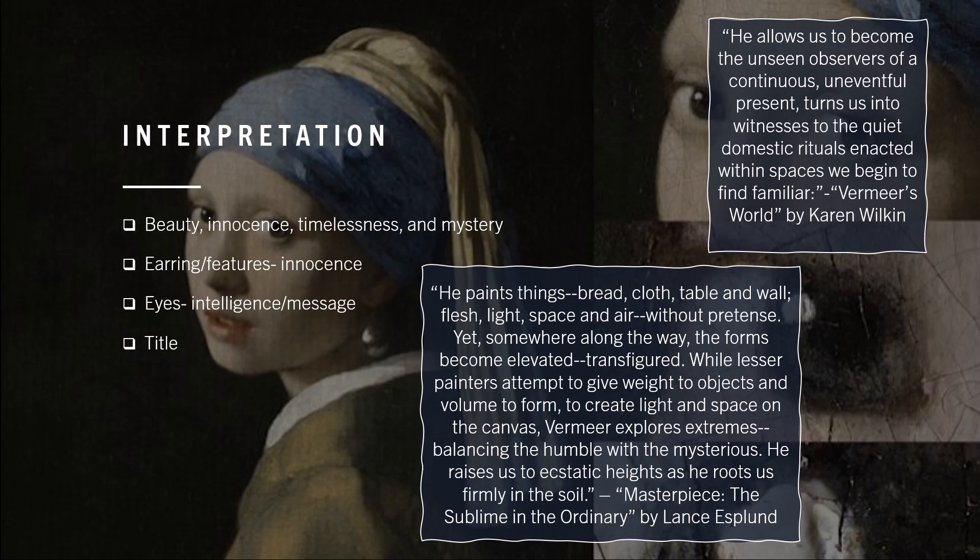In Vermeer's World, Karen Wilkin perfectly expresses this message seen in Vermeer's paintings when she states: "He allows us to become the unseen observers of a continuous, uneventful present, turns us into witnesses to the quiet domestic rituals enacted within spaces we begin to find familiar." The title of this piece has been changed over time. While the piece used to be called The Girl with the Turban, it is now known as Girl with the Pearl Earring. This title is important because it perfectly encompasses the ambiguity of the painting as a whole. The subject is anonymous, the message is unclear, and the emotion is mysterious.